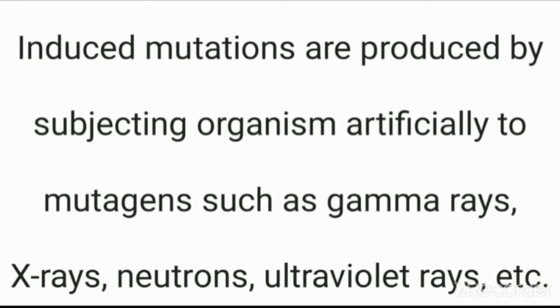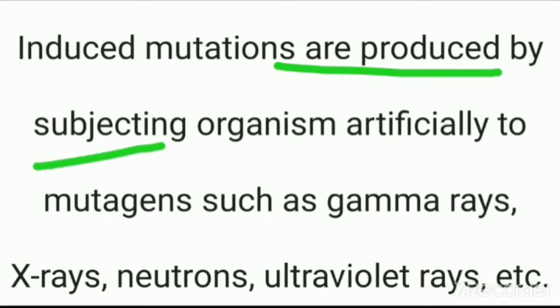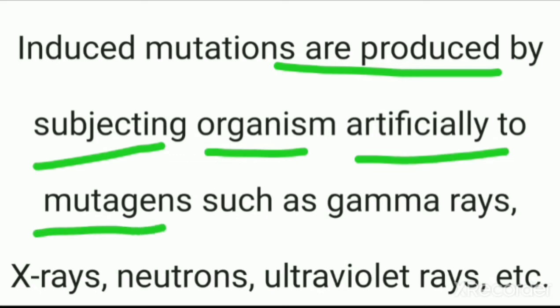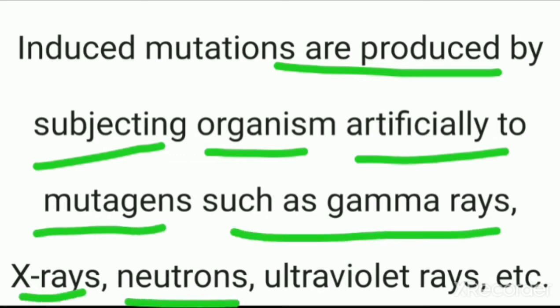Now let's understand what induced mutation means. Induced mutations are produced by subjecting an organism artificially to mutagens, such as gamma rays, X-rays, neutrons, and ultraviolet rays.